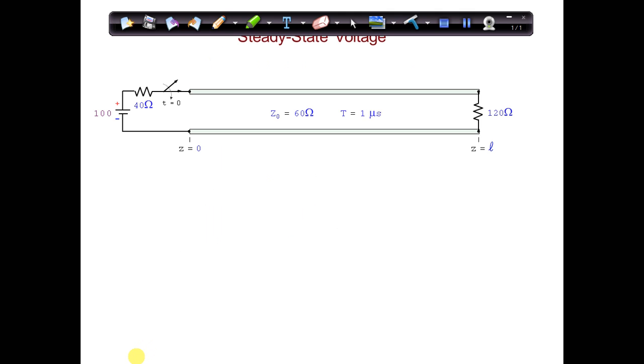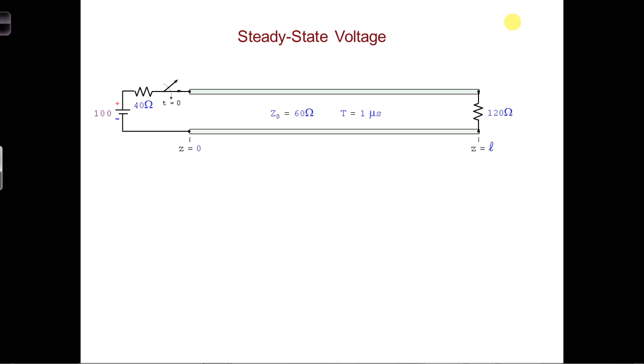Okay, so let's go back to the scenario we had earlier, when we created the bounce diagrams. We looked at the first several reflections. Let's revisit this problem, except now you can check to see if the value we obtained for the steady state voltage, using the formulas we just developed, where we assume the load is directly connected to the generator.